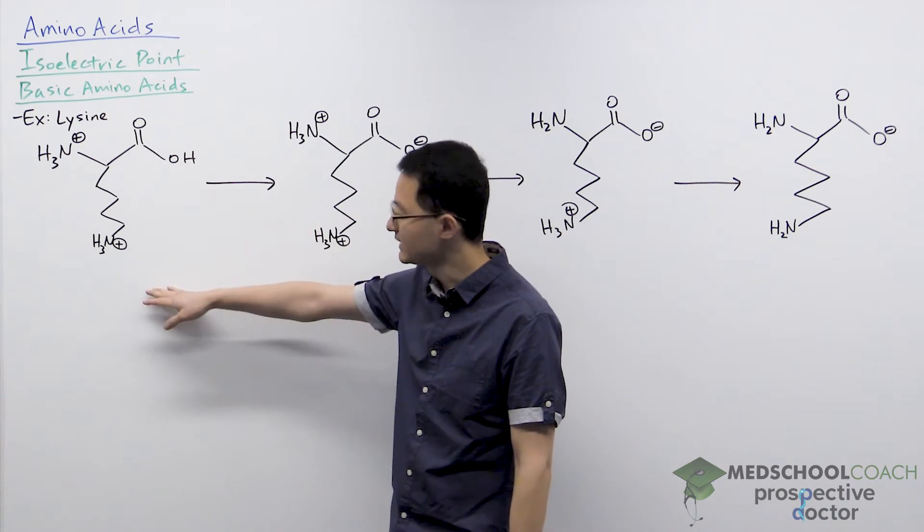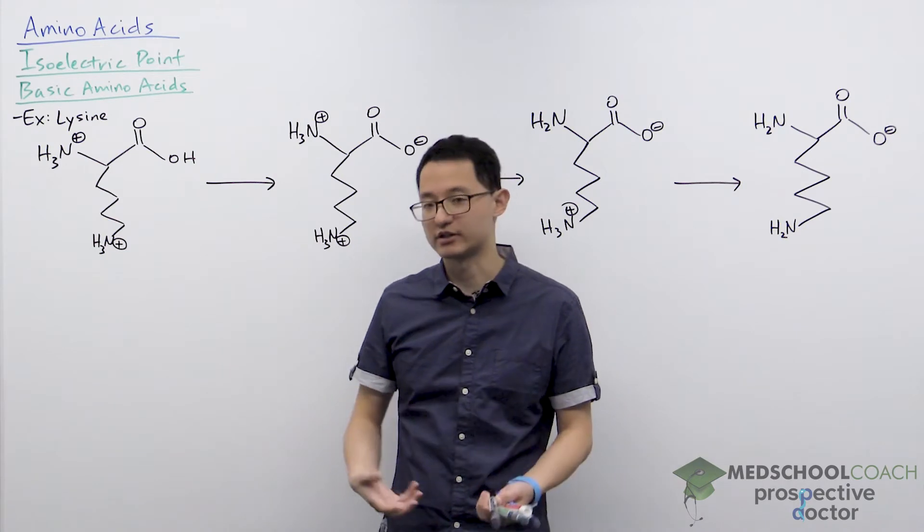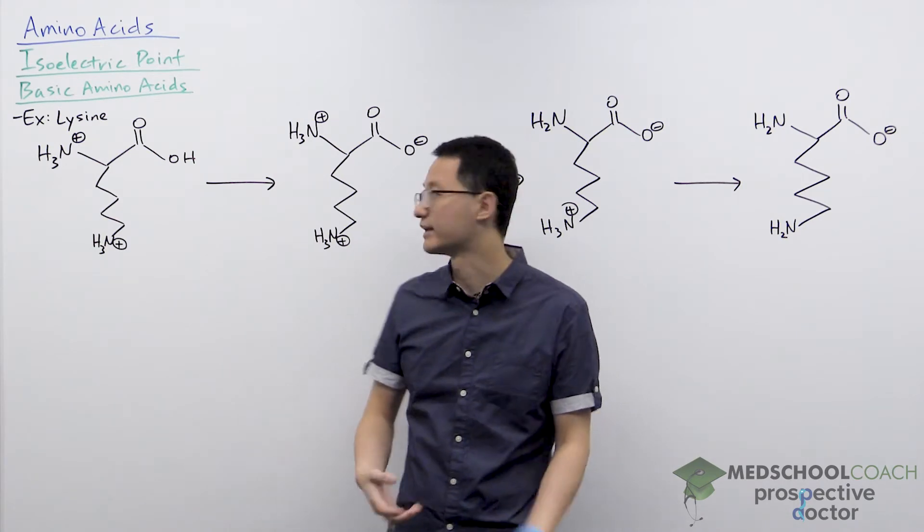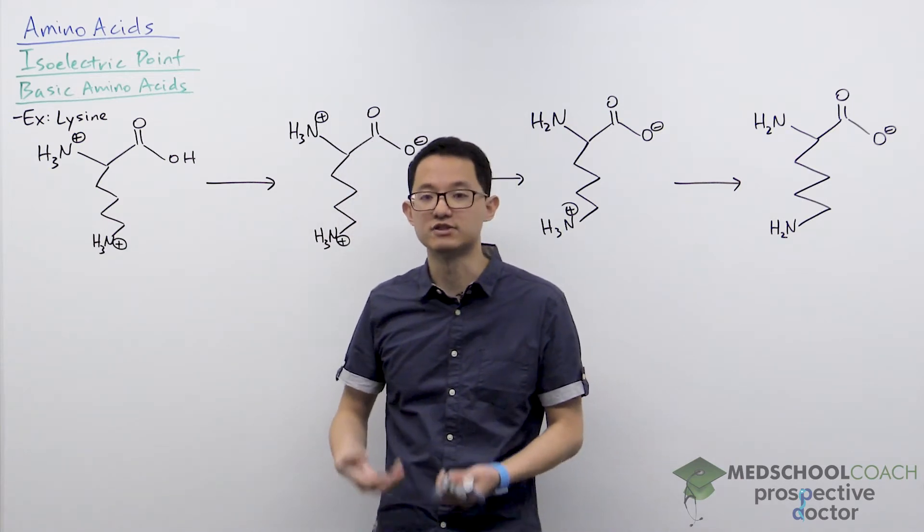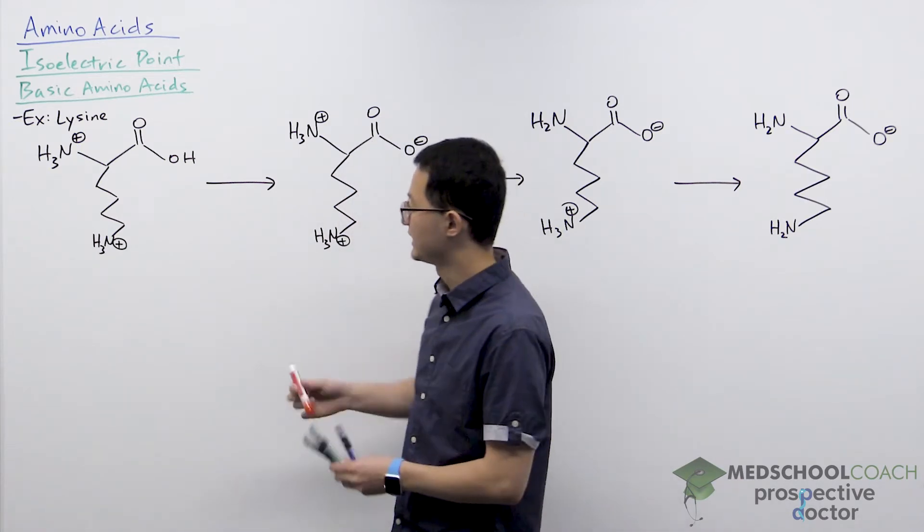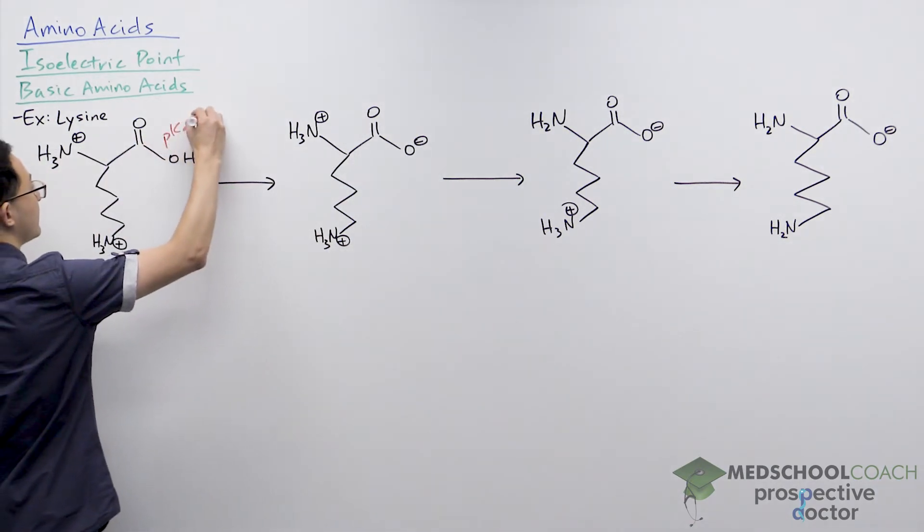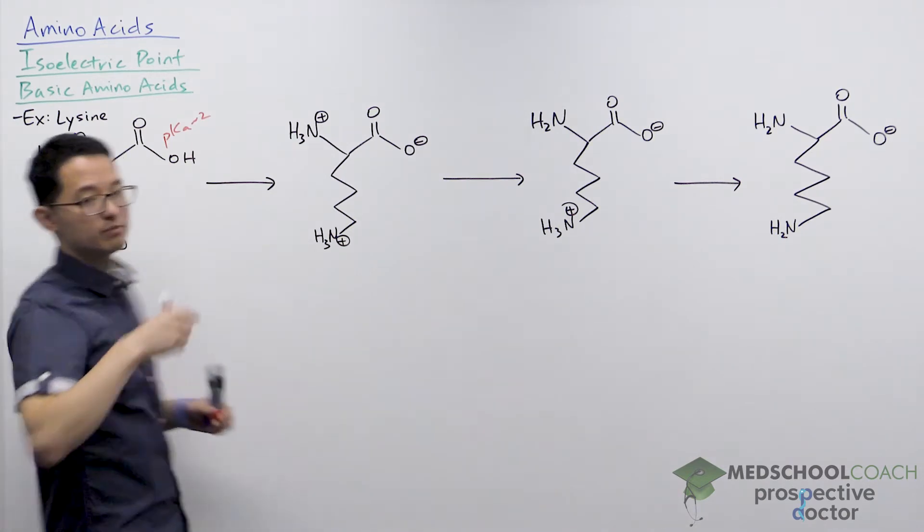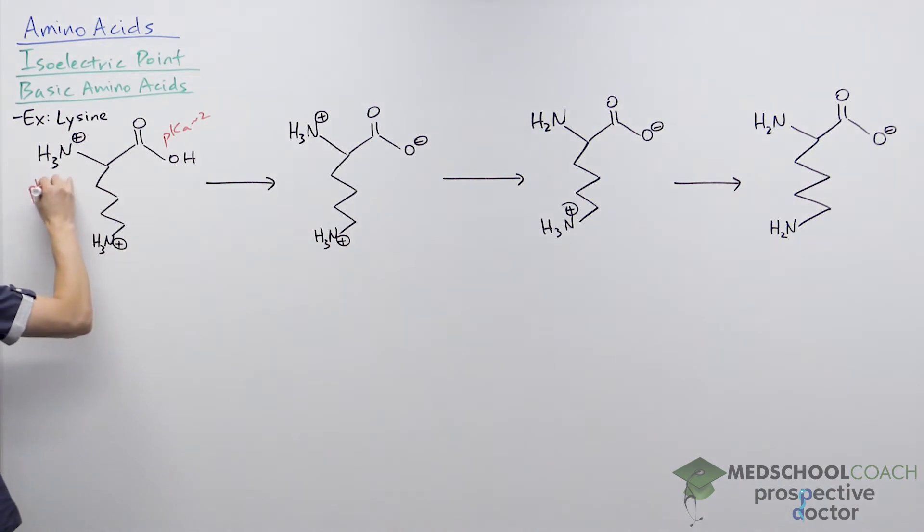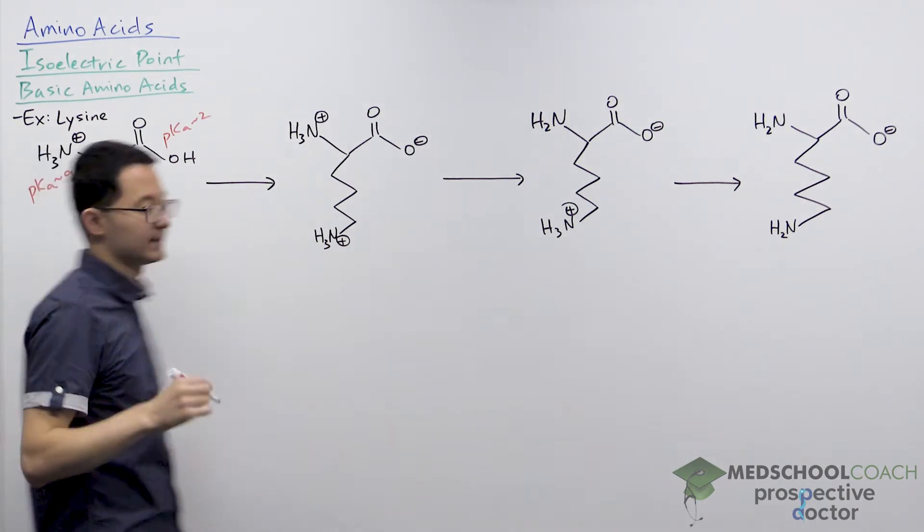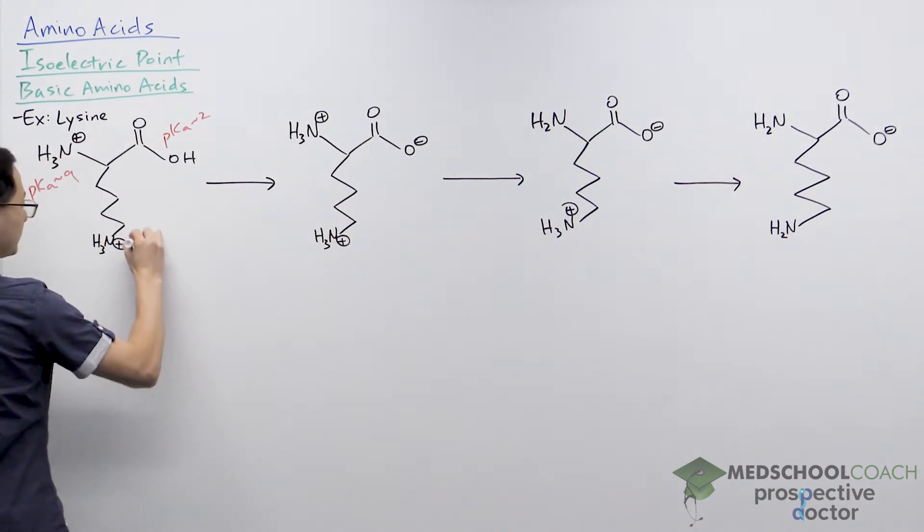Here's the sidechain of lysine. As I mentioned, basic and acidic amino acids have more complicated isoelectric points to calculate because now we have three different acidic groups and three different pKa values to deal with. For lysine, its carboxylic acid has a pKa value of about 2, its amino group at the N-terminus has a pKa of about 9, and the sidechain of lysine has a pKa of about 10.7.